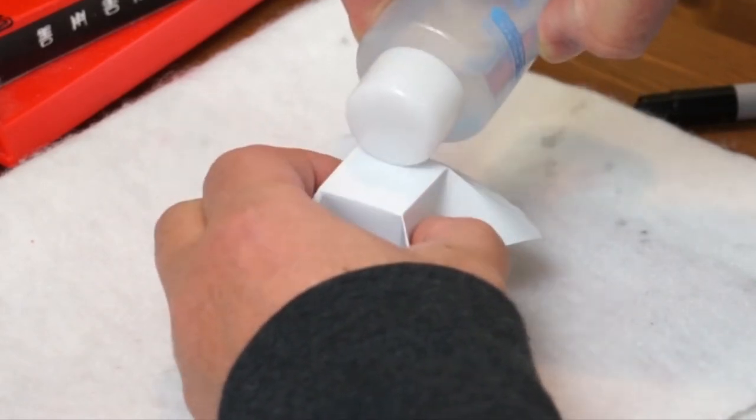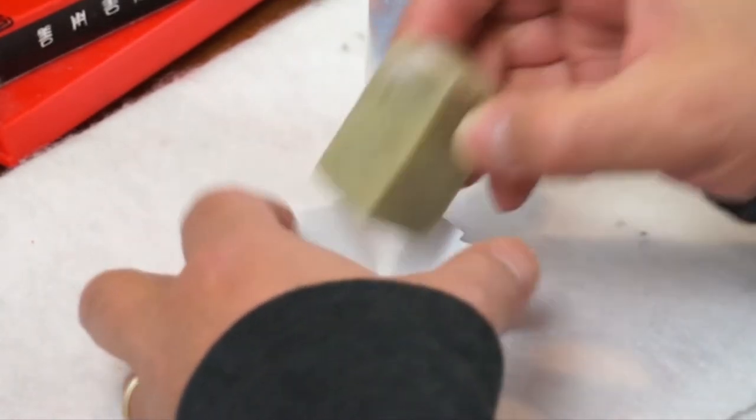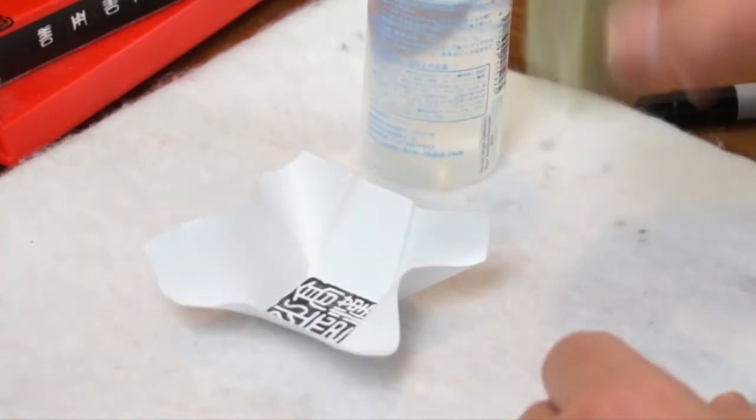The liquid could be applied on either side. You can pour the liquid on this side, it will penetrate through. Or you can just pour the liquid directly on the design, and then just stamp it.